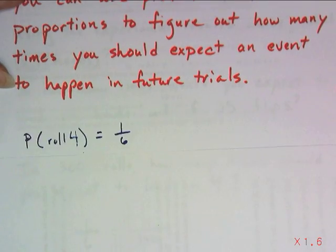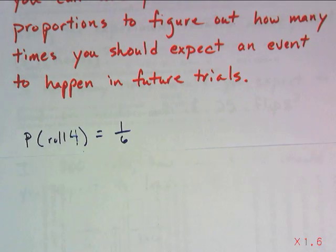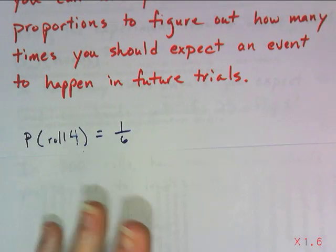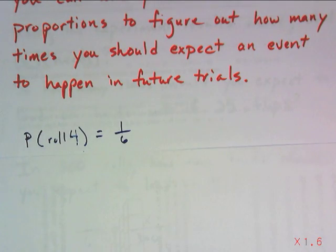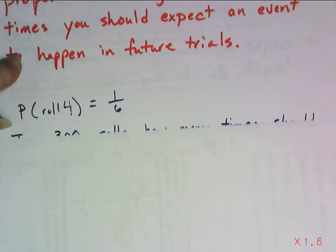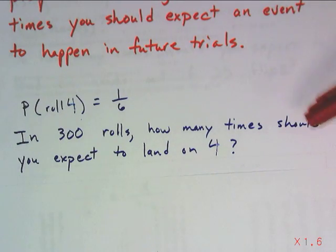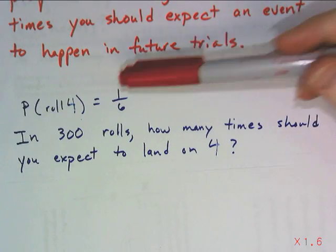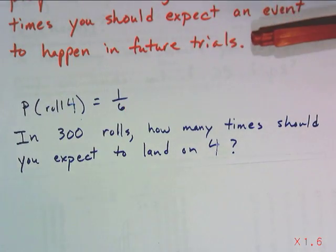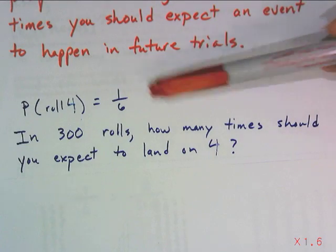So let's take a look here. We know the probability of rolling a 4 on a regular die is 1 out of 6 because that 4 is one side out of 6. They're all equally likely to land. So what about if I were to plan on rolling that die 300 times? How many times would I expect to land on the 4?